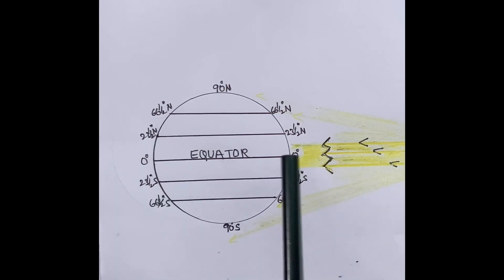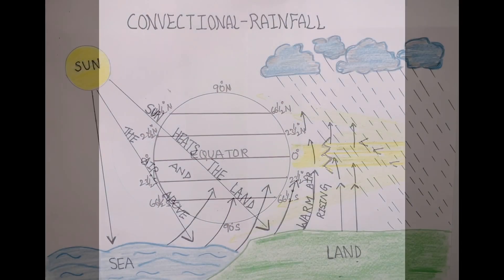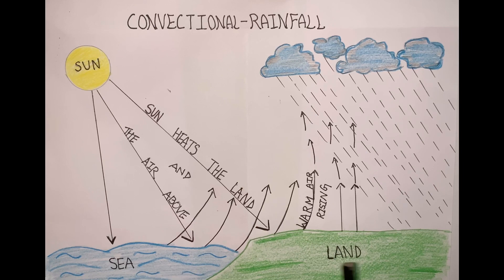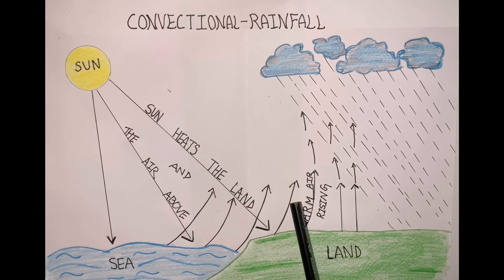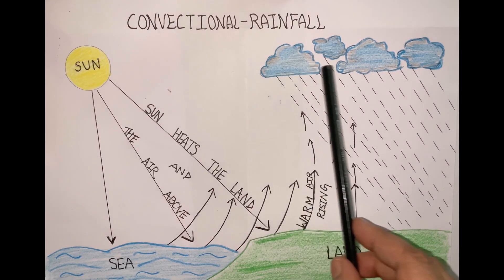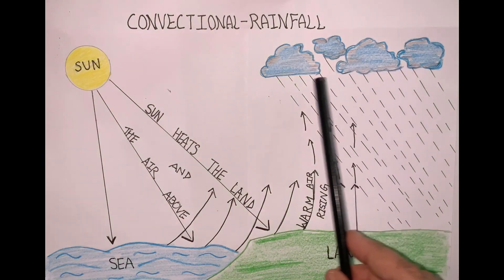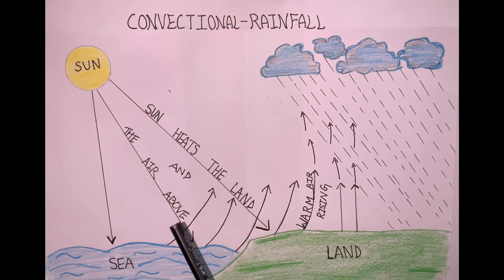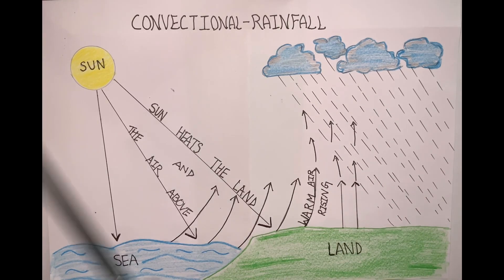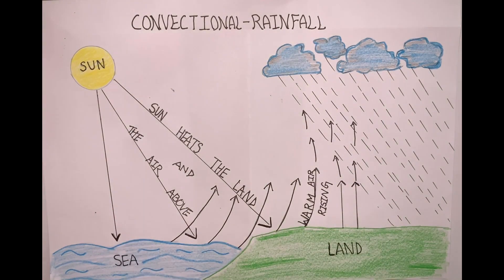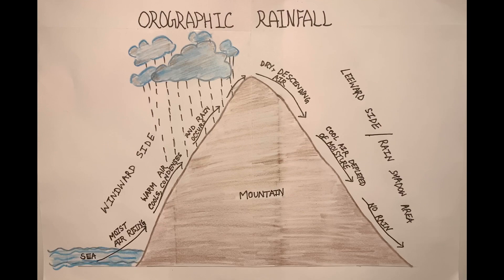The equatorial zone experiences direct rays of the sun almost throughout the year. Due to the intense heating of the surface, the surface air gets heated, expands, and rises up convectionally. This warm air holds moisture; as it rises up it cools adiabatically and condenses. The clouds become heavier with the accumulation of water droplets, and finally burst, causing precipitation. This type of rainfall mostly occurs at four o'clock in the afternoon.